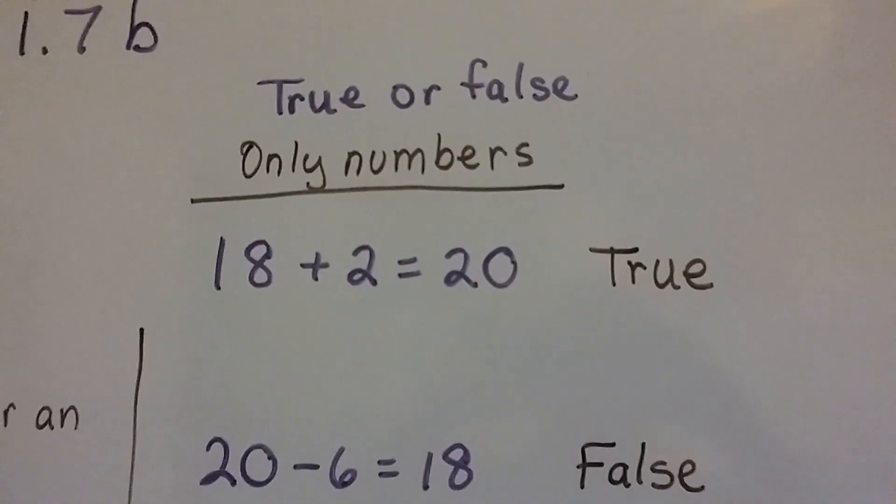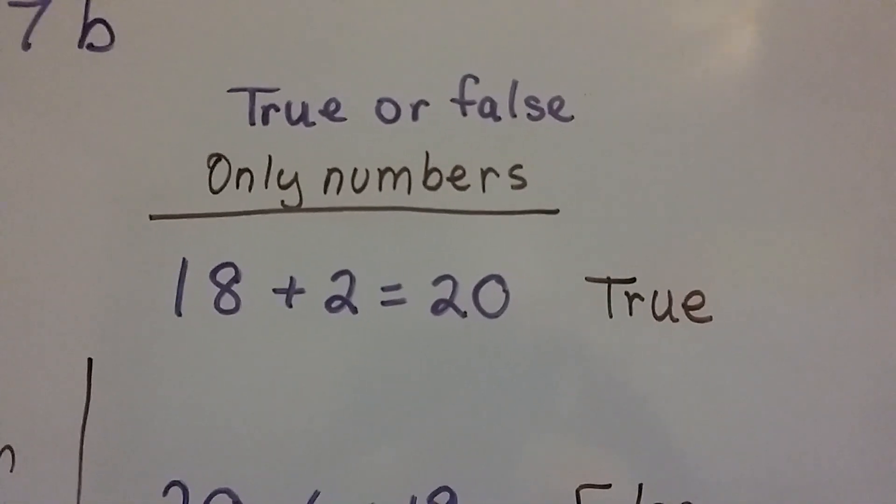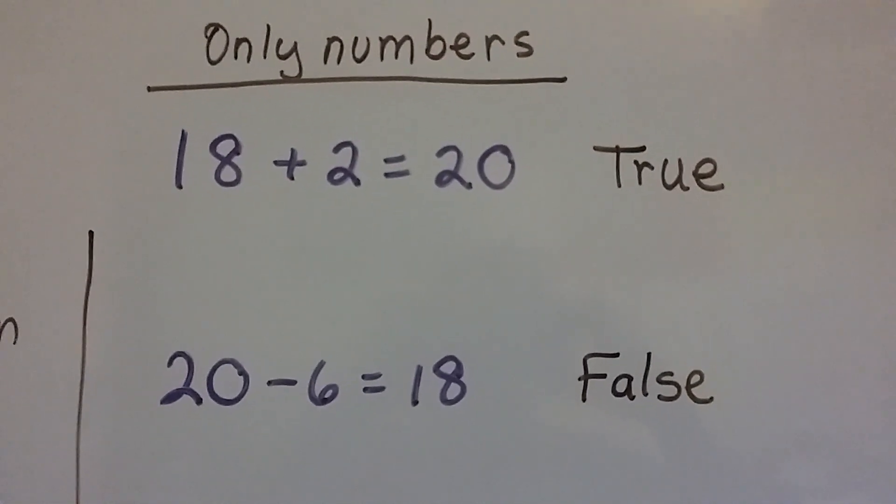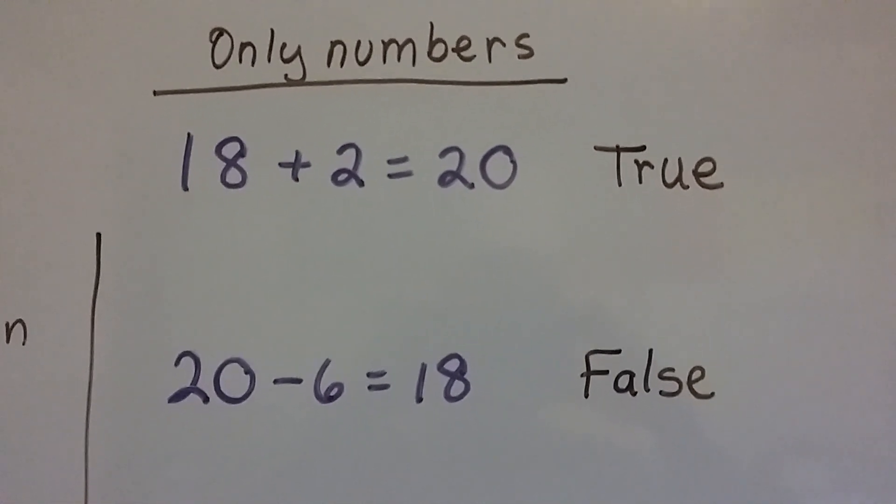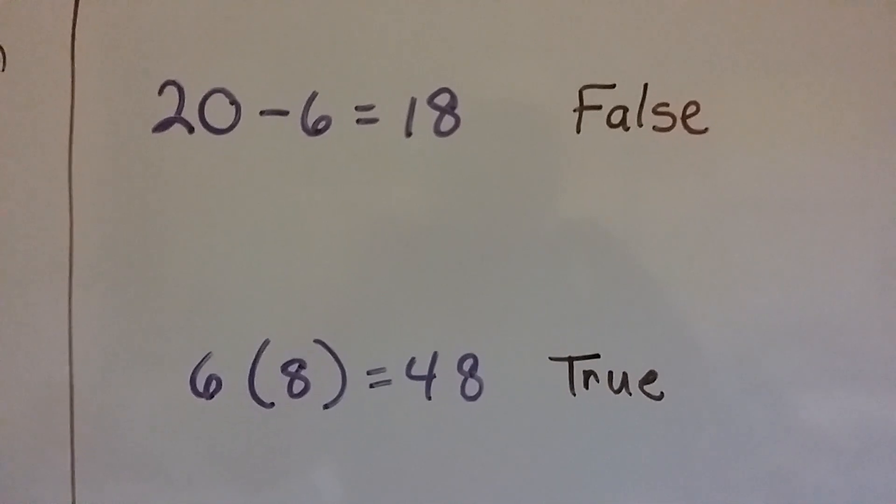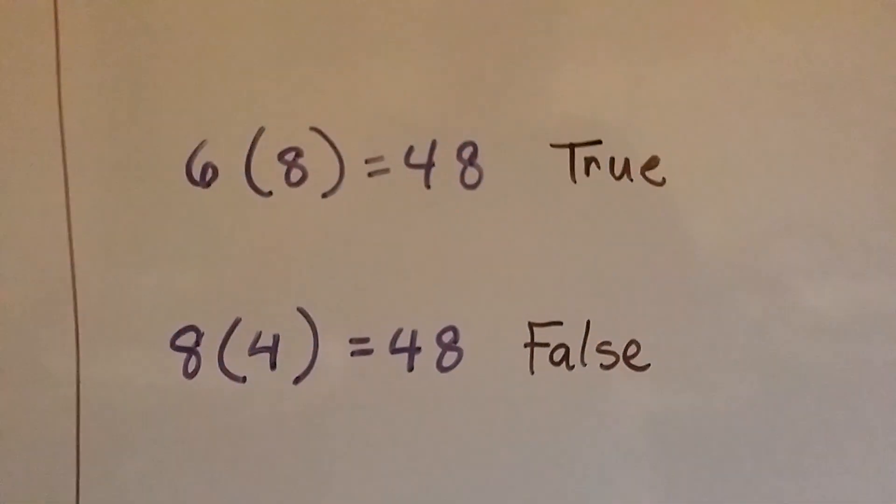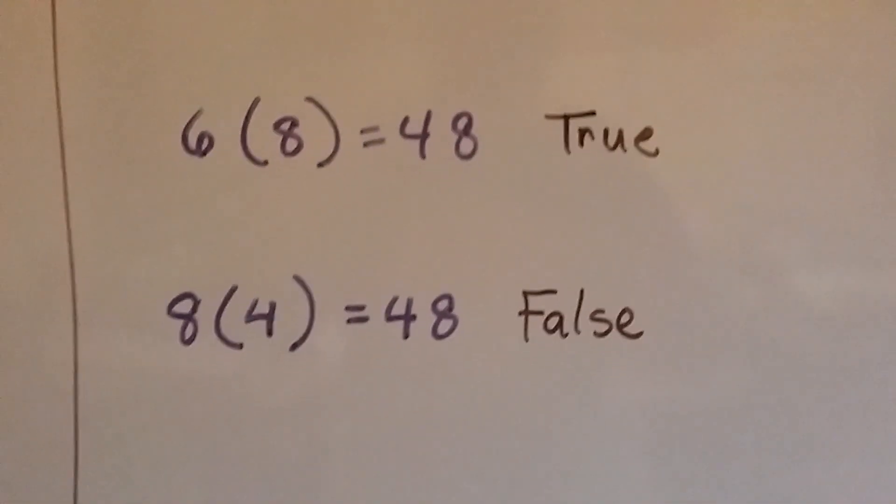So 18 plus 2 equals 20, that's true. 20 take away 6 is 18, that's false. 6 times 8 is 48, that's true. 8 times 4 is 48, that's false.